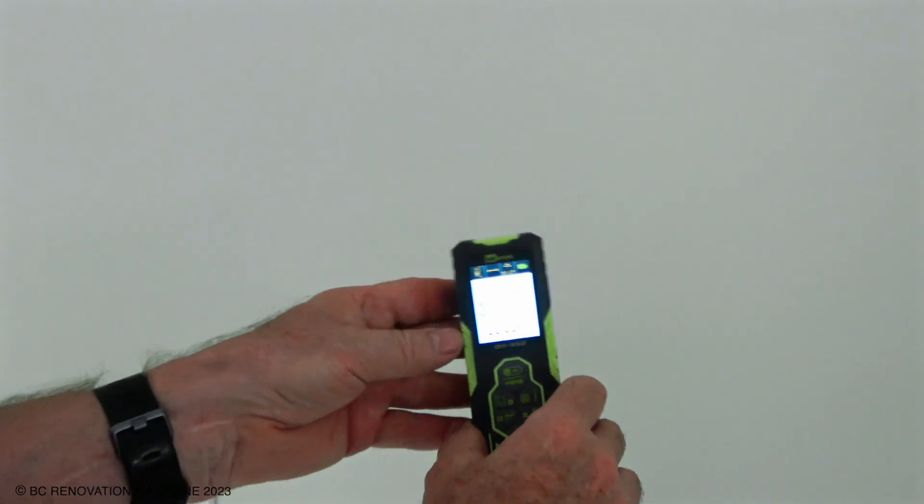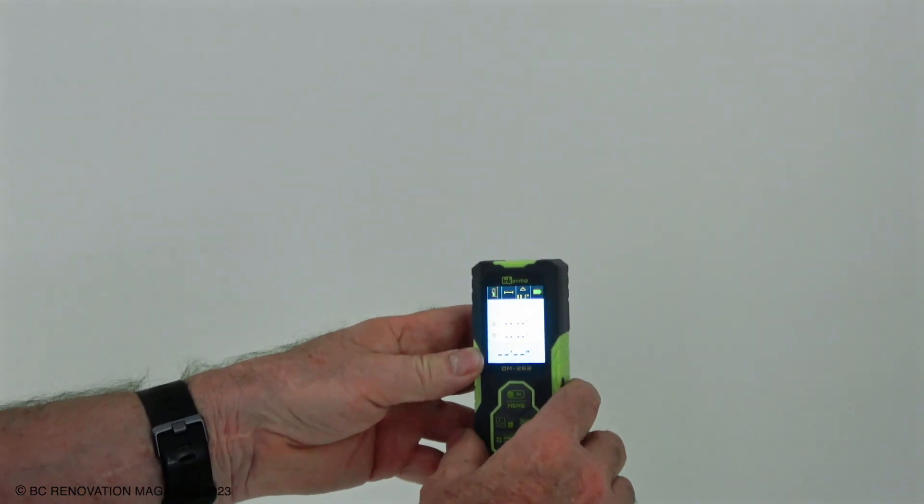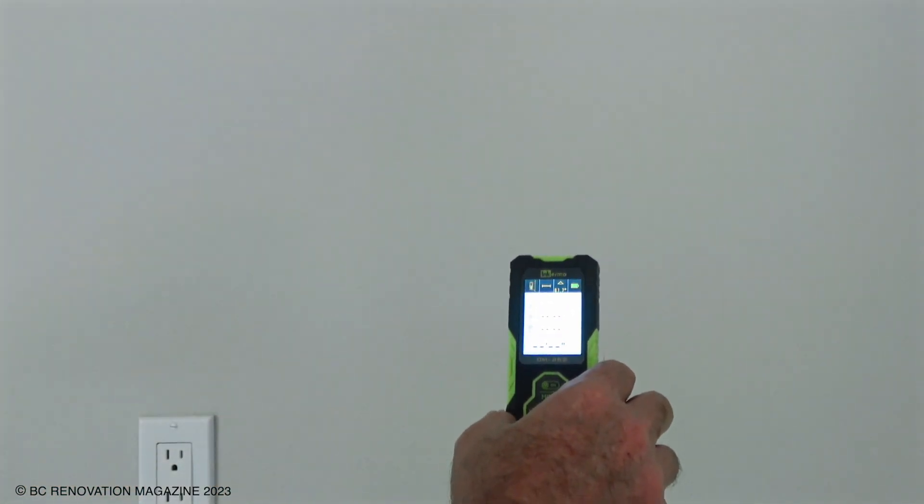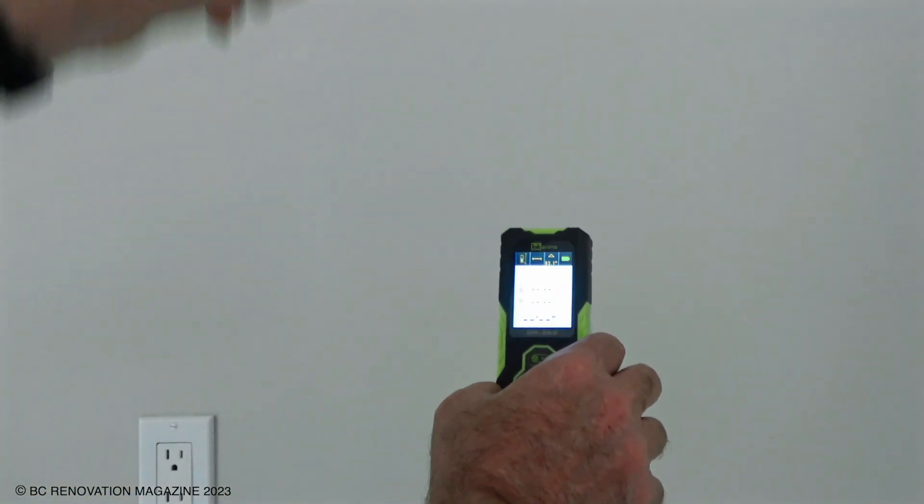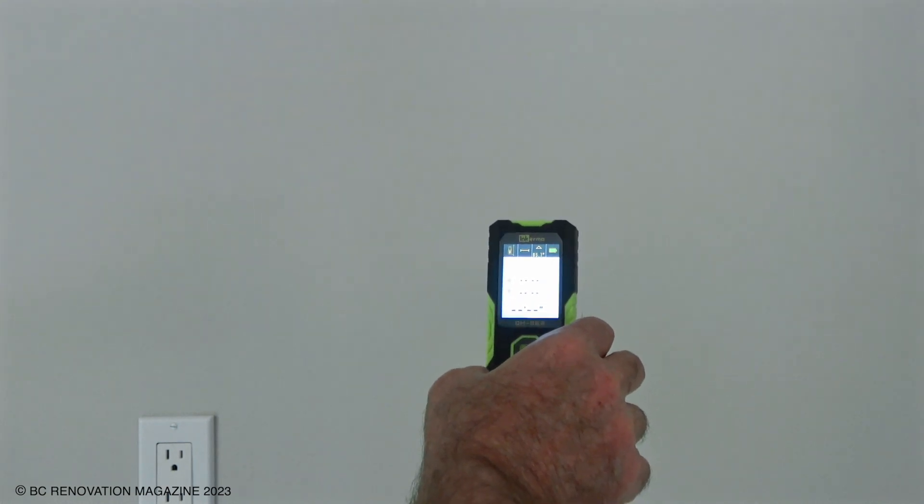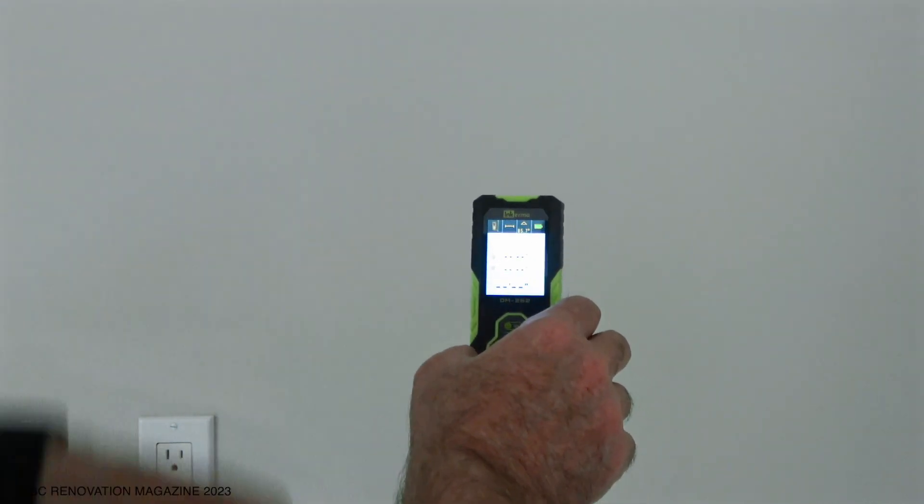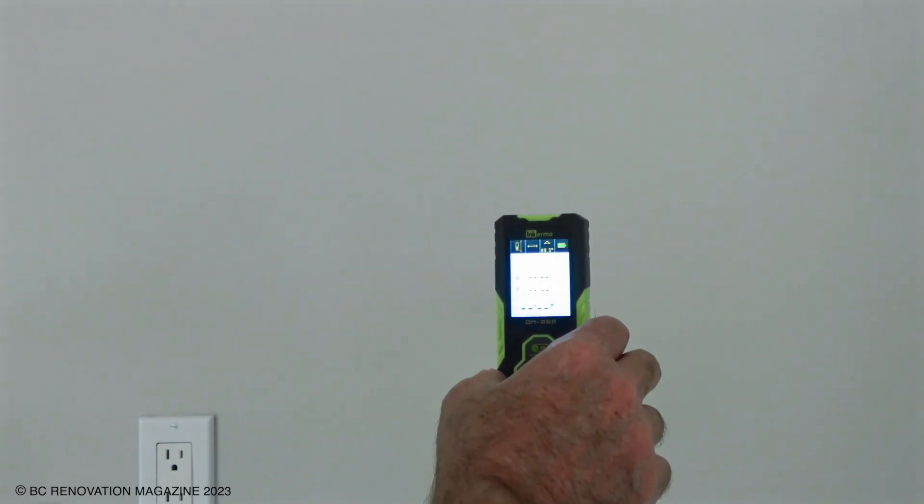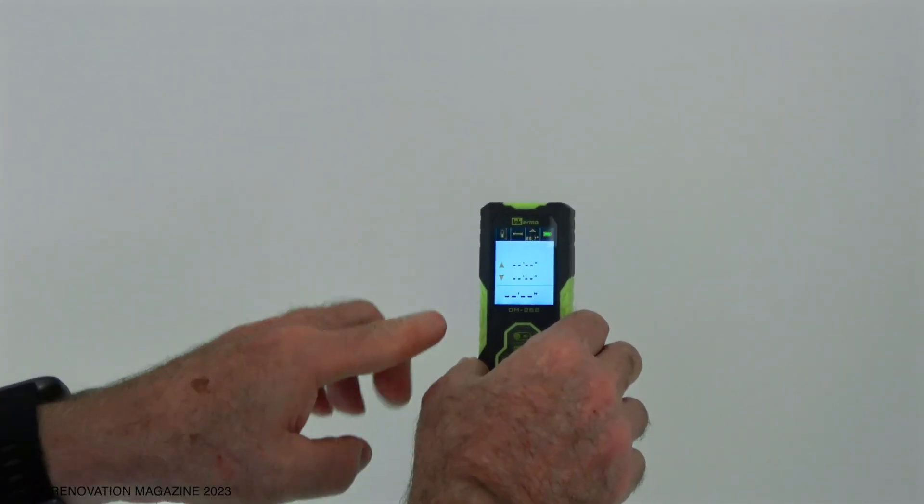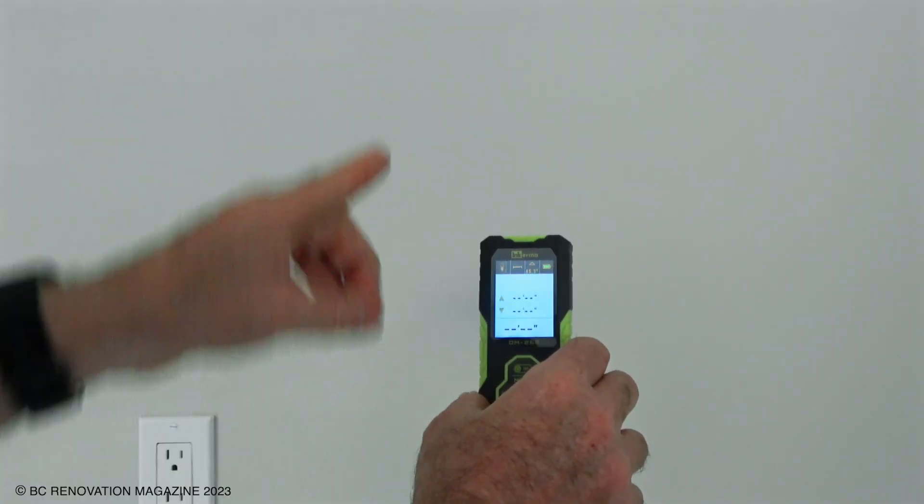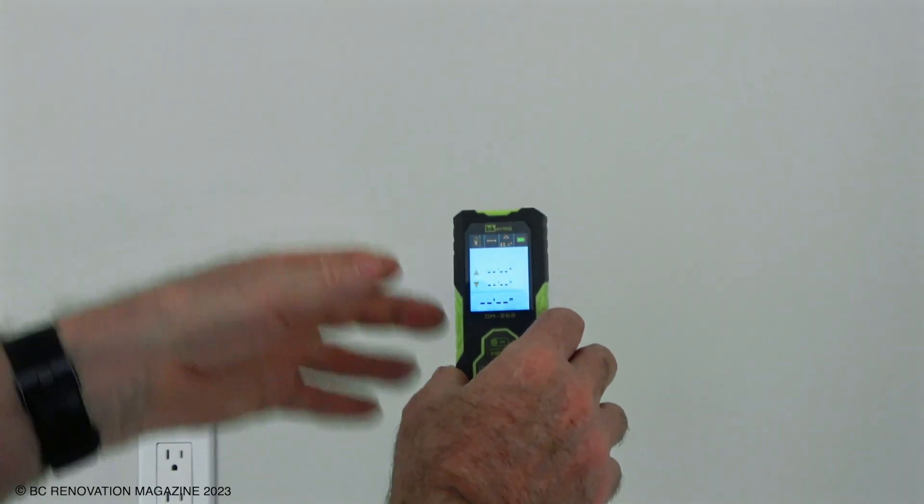So the way this works is it projects a laser beam out each end to the place that you want to measure. Here we have a ceiling above us and a floor below us, and then it takes those two calculations and inside the device it makes a calculation of how much that distance is.